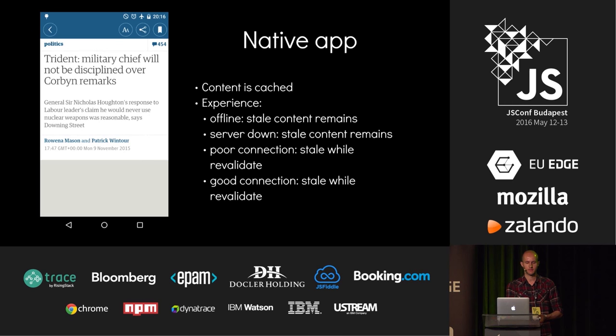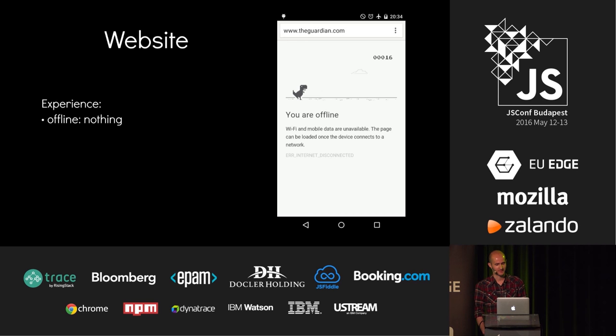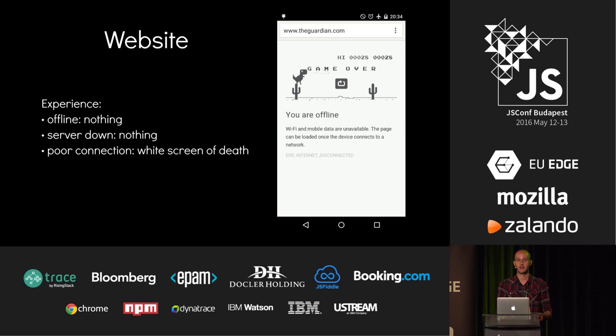We all know this because we use native apps every day. But on the web, if you're offline, you don't really get anything. If I try to go to the Guardian.com and I'm offline, I'll just get this Chrome offline page. Little known fact, there is a game you can play if you tap on the dinosaur. If the server is down, again, I'll just get this page — it's not very useful.